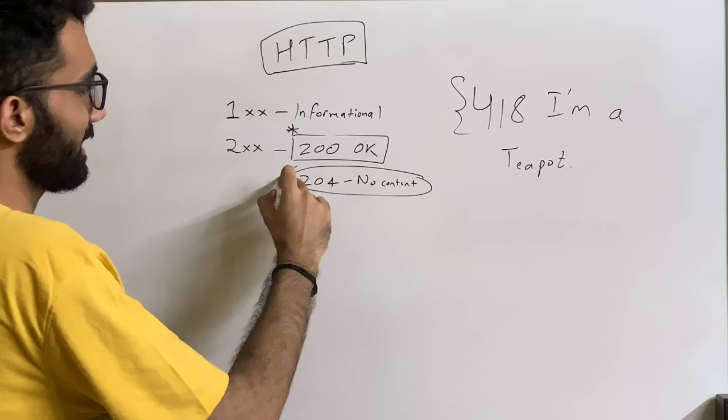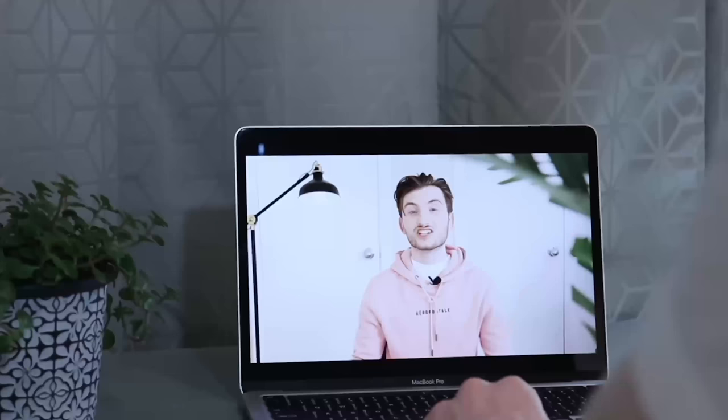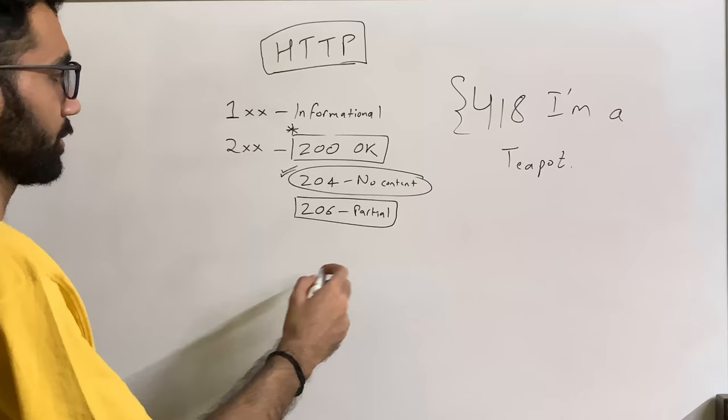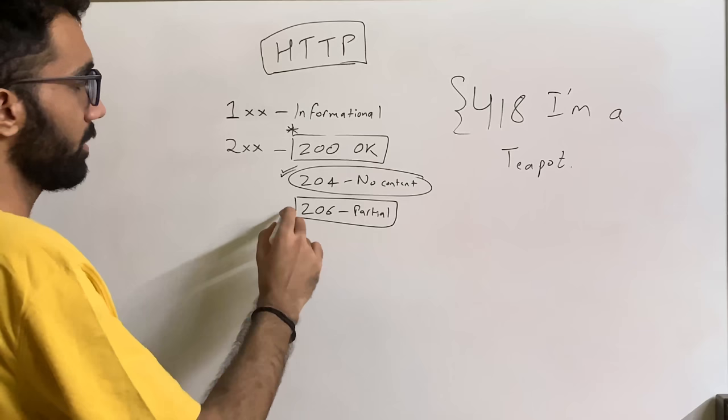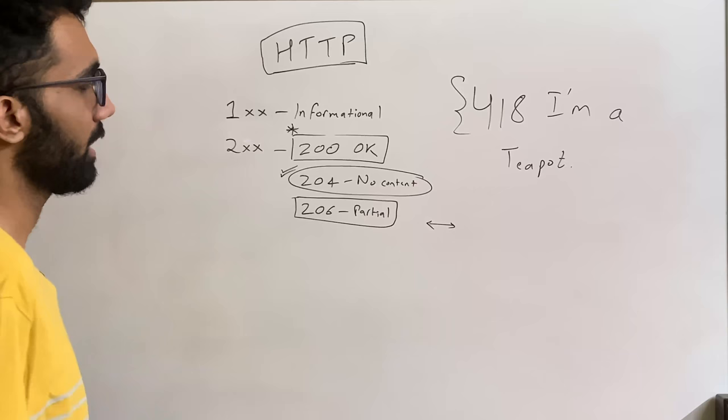You also have 206 as the partial content status code, which is very useful when you're streaming a video. You don't want the server to return the full video in a single response because that would be heavy and you'd lose the ability to seek the video and download selective parts. So the server returns 206 as the code.